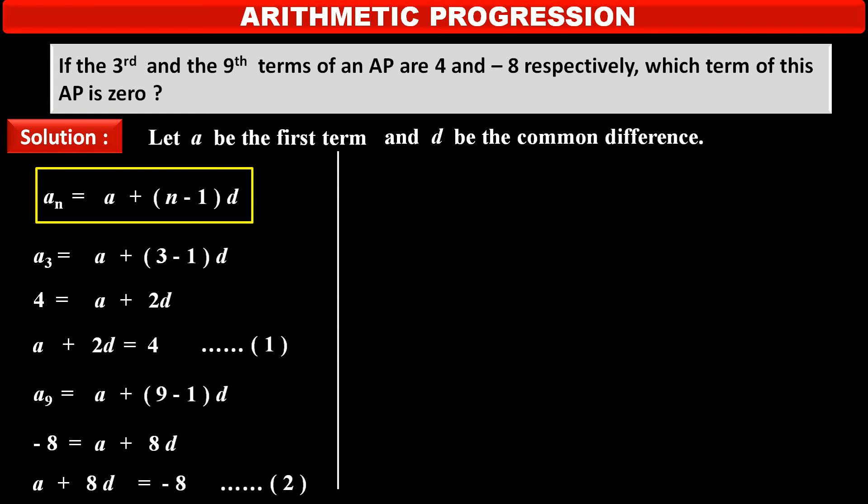Now, we have to solve these two equations, equation 1 and 2, simultaneously to find values of A and D, first term and common difference. So, subtracting equation 1 by 2, we get A and A cancel each other. 8D minus 2D that is 6D which is equal to minus 8 minus 4 that is minus 12. So, we get 6D is equal to minus 12 by subtracting these two equations.